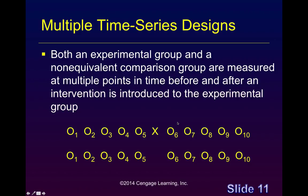Multiple time series designs are like a blend of simple time series designs and the earlier comparison group models. We have multiple observations — one group gets the intervention and the comparison group doesn't — then we make multiple observations again to see if there is a change not only in the experimental group before and after the intervention, but also whether there is any change in the comparison group.